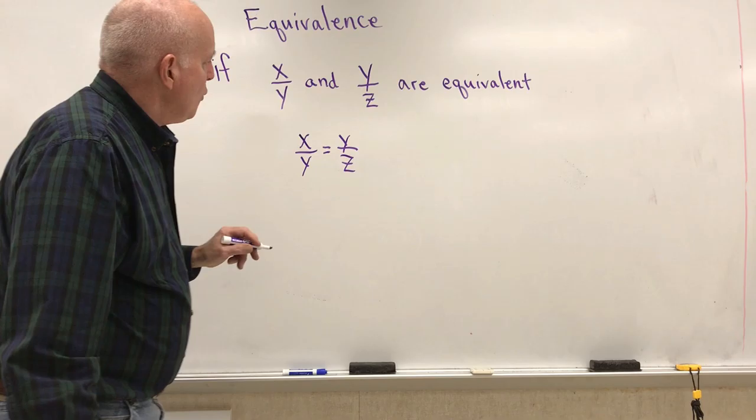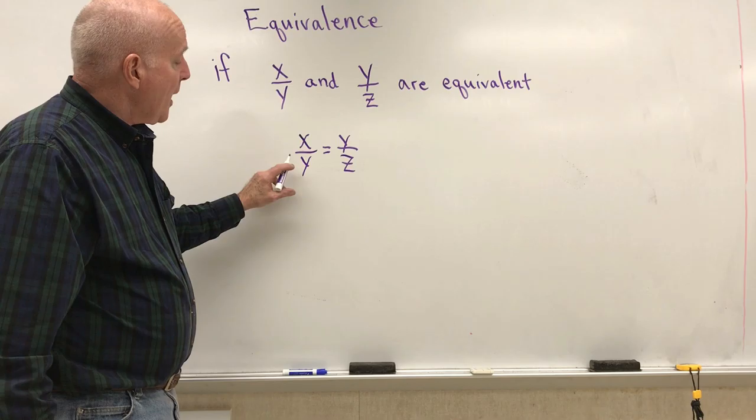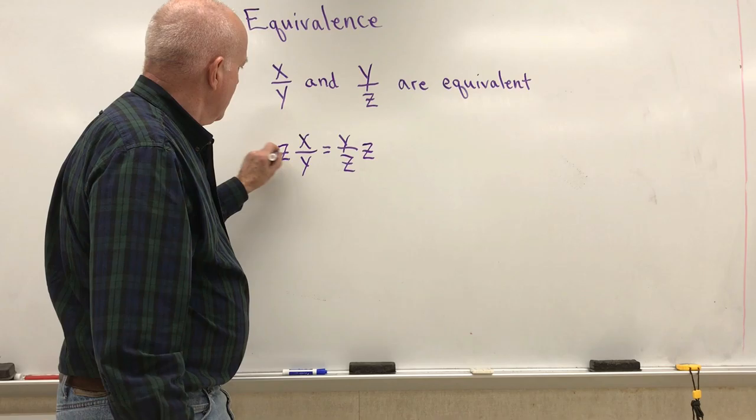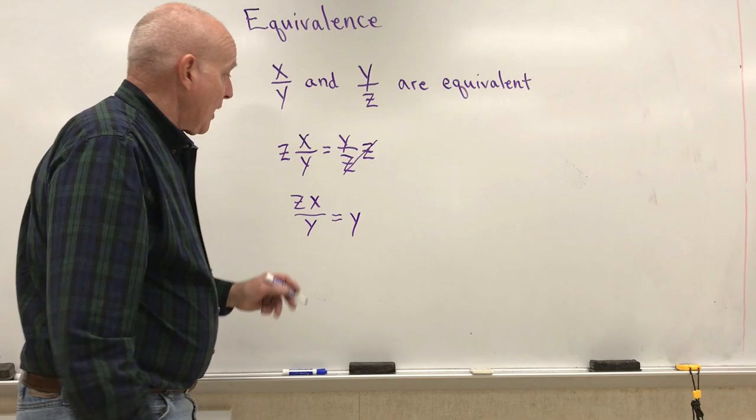Well, we can manipulate things and move them around to get to different formulations that say the same thing. For instance, what if I multiply both sides by z? Alright, that knocks that out and I get zx over y equals y. That would be one thing that would be true.